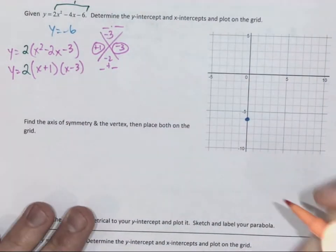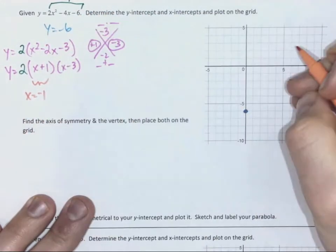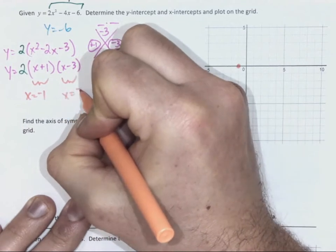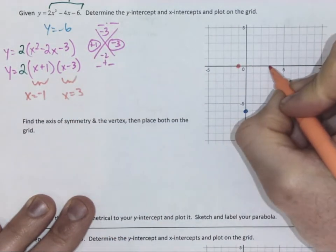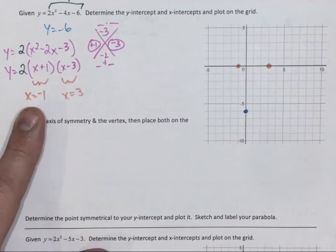From that, I know my x-intercepts. From that bracket, x is negative 1. I'm going to plot it. And from that bracket, x is 3, positive 3. I'm going to plot it. And now I need to find my axis of symmetry.